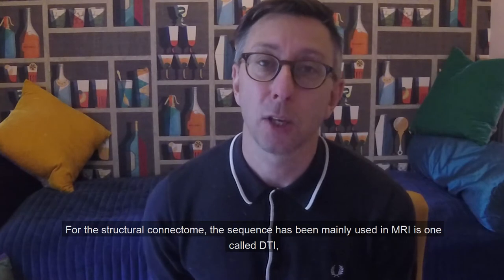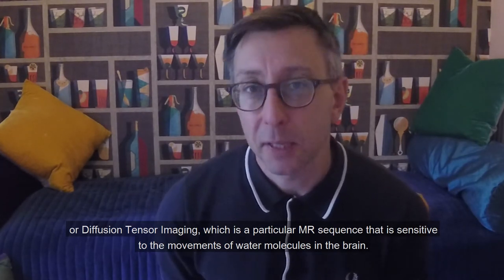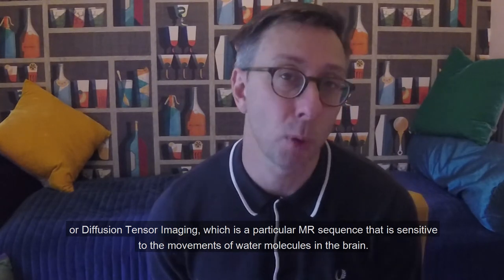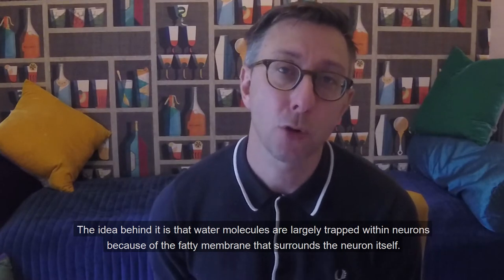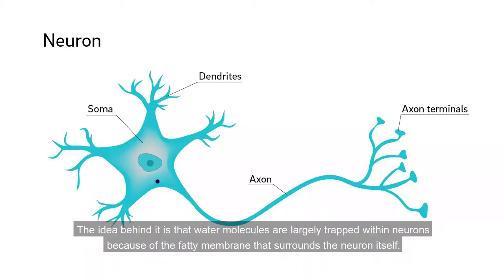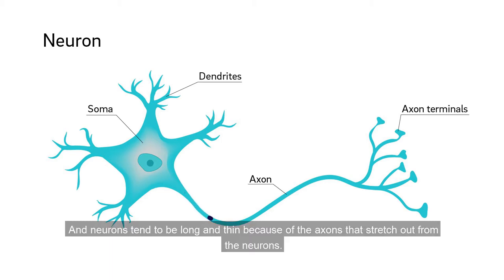The structural connectome mainly uses an MRI sequence called DTI, or diffusion tensor imaging, which is sensitive to the movement of water molecules in the brain. Water molecules are largely trapped within neurons because of the fatty membrane surrounding the neuron. Water isn't free to move in and out, but it is free to move within the neuron, and neurons tend to be long and thin because of the axons that stretch out from them. So water can move along the length of the axon, but not in and out of the axon very easily.